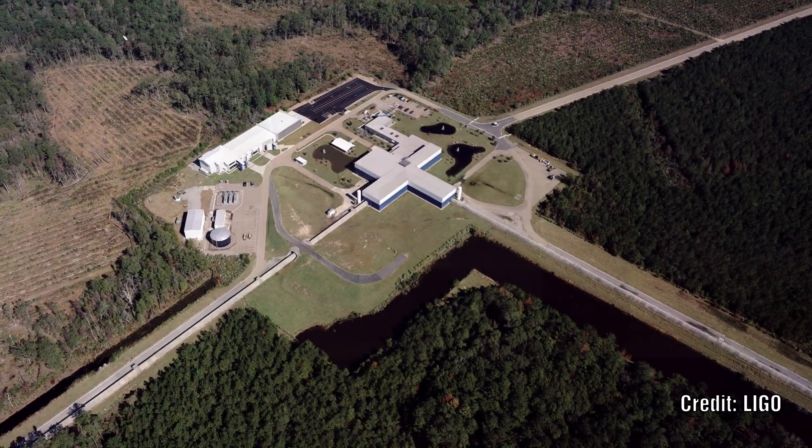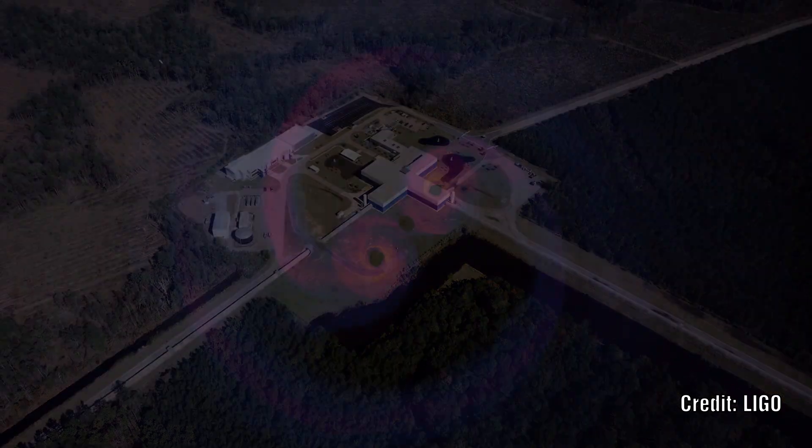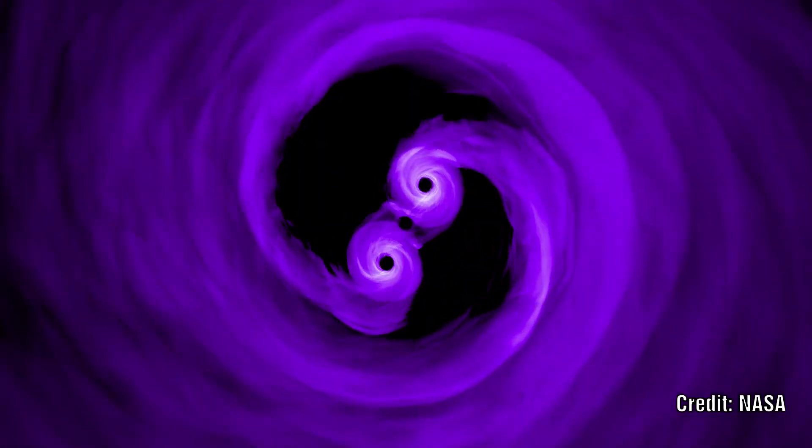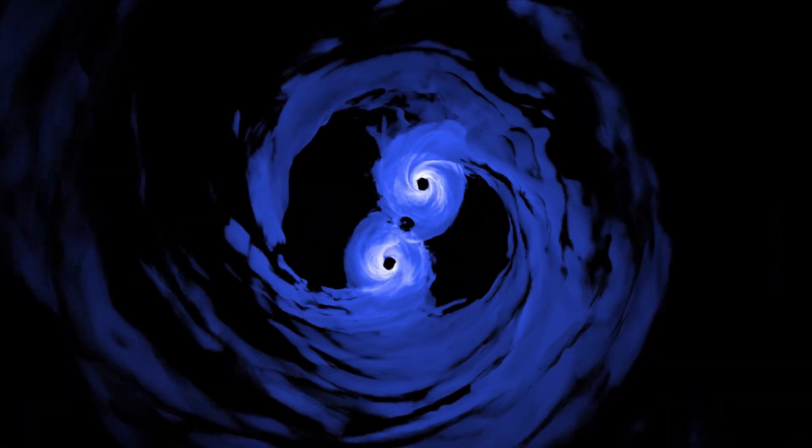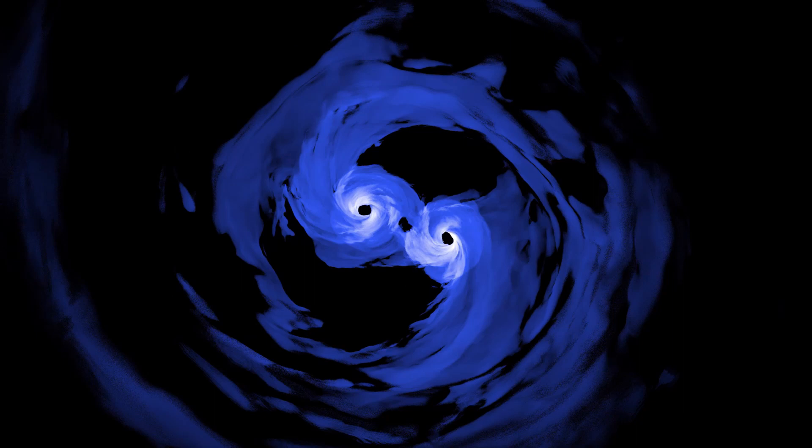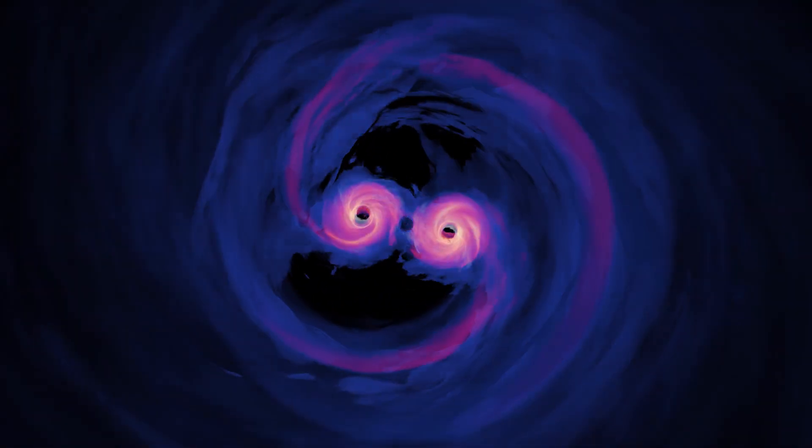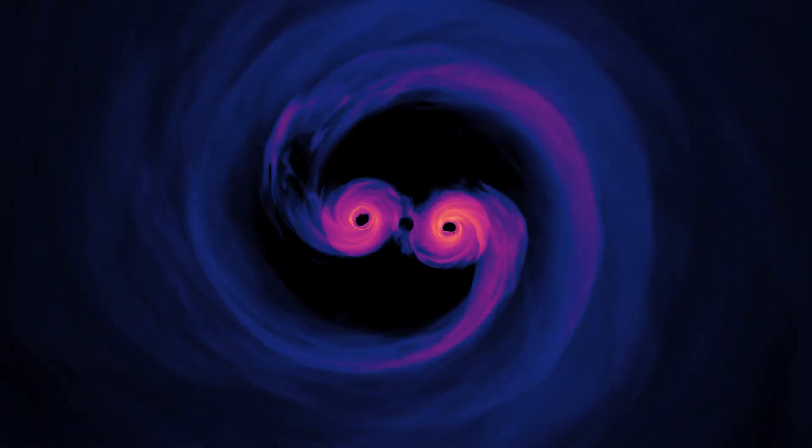In a new announcement by the LIGO team, they claim to have detected a neutron star and black hole merger. This finding would be several orders of magnitude smaller than the previous black hole-black hole merger. And when you dig a little deeper into LIGO, all is not as rosy as it seems, and many questions have been raised about whether they have actually detected anything. So let's find out more.